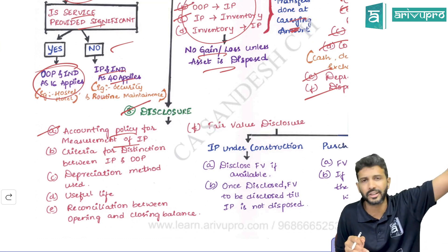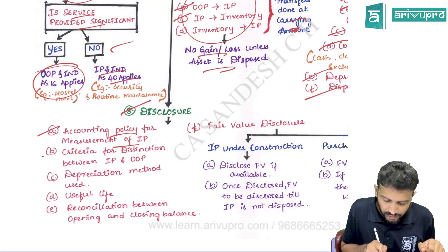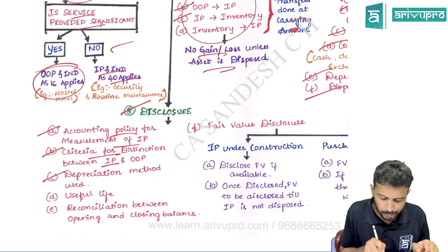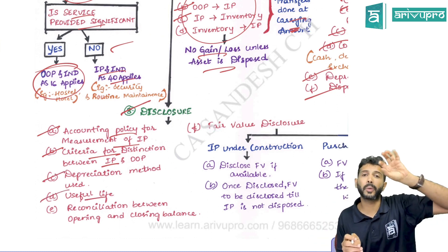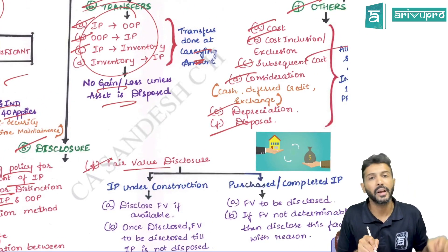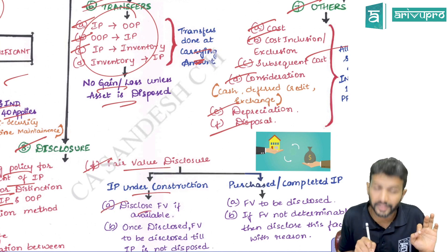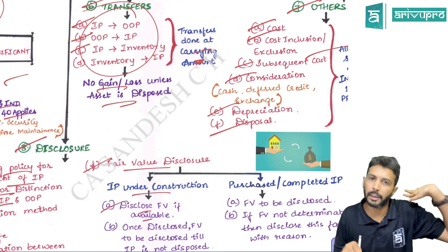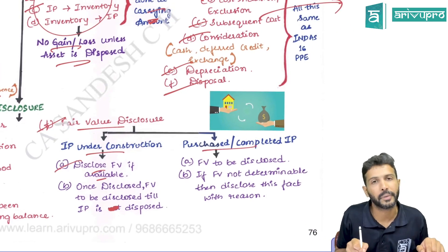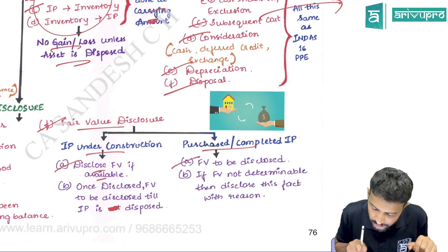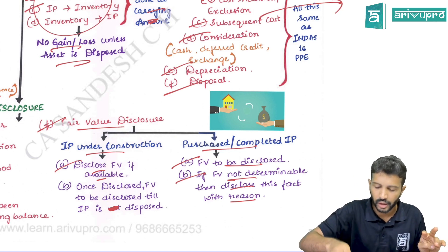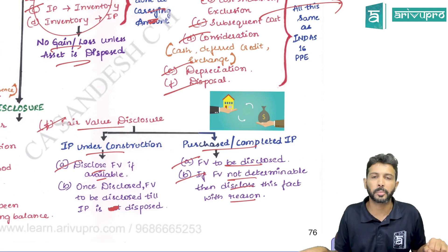For disclosure, disclose the accounting policies used for investment property. If property is used for multiple purposes, disclose the criteria used to segregate IP and OP. Disclose the depreciation method used, useful life used, and a reconciliation between the opening and closing balance of IP. Specific disclosure for fair value is also required: if IP is under construction, disclose fair value only if available. Once you have a completed or purchased IP, fair value must be compulsorily disclosed. If you are unable to find fair value for any reason, state the reason why. This was a quick revision on Ind AS 40 Investment Property.